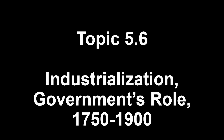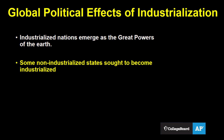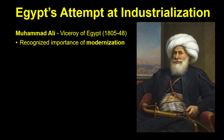Now we're moving on to topic 5.6: industrialization and government's role. The surge in productive capacity from industrialization also shifted the balance of power politically, with the industrialized nations becoming the great powers of the earth. Some leaders of non-industrialized states saw this happening and attempted to be on the winning side of this historical trend. We'll look at the examples of Egypt, Russia, and Japan in the 19th century. Egypt was officially part of the Ottoman Empire, but had a large degree of independence under the leadership of Muhammad Ali, the viceroy of Egypt. Ali was a shrewd observer of global trends and made a concerted effort to modernize Egypt.